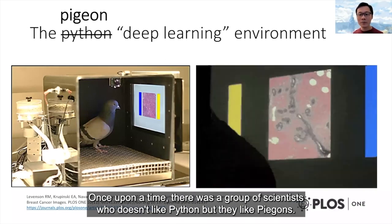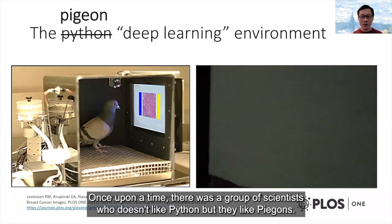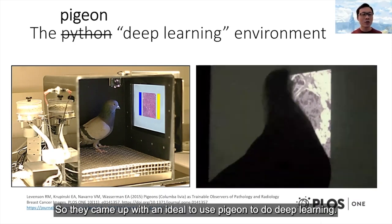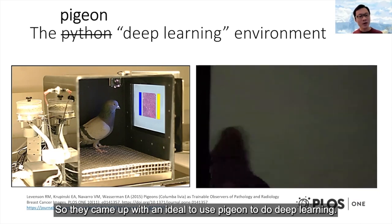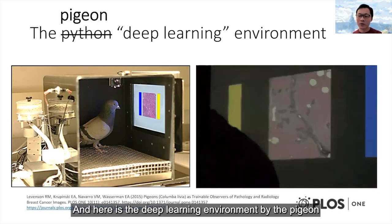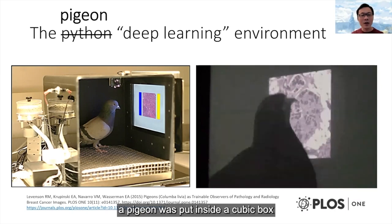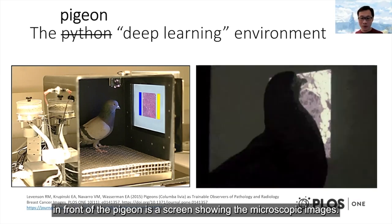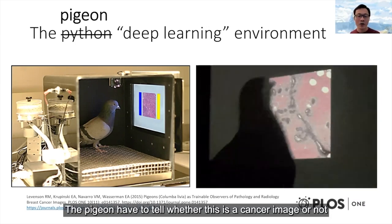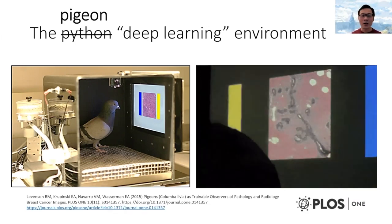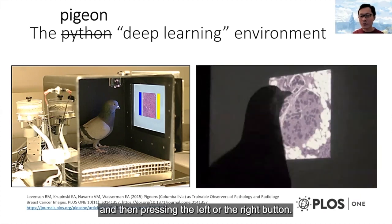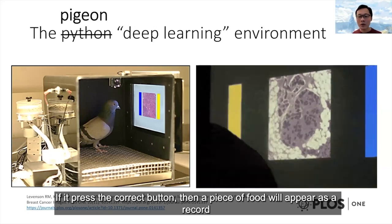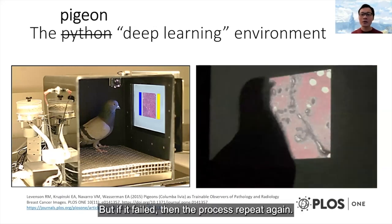Once upon a time, there was a group of scientists who didn't like Python but liked pigeons, so they came up with an idea to use pigeons to do deep learning. A pigeon is put inside a cubic box, and in front of the pigeon is a screen showing a microscopic image. The pigeon has to tell whether this is a cancer image or not by pressing the left or right button.